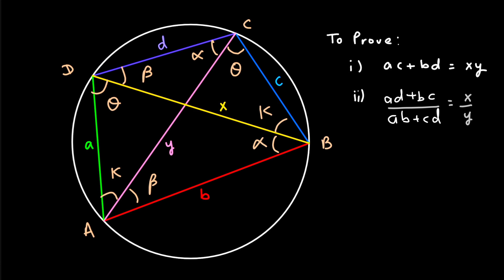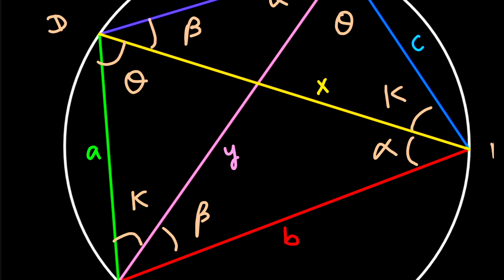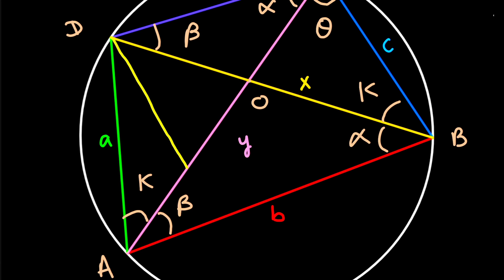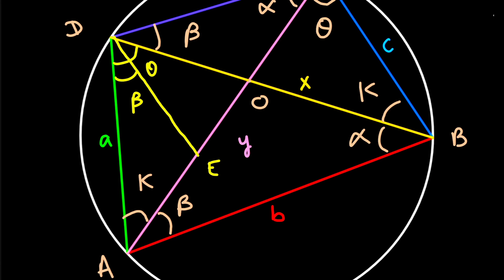Now let us do the trickiest part that will lead us to the answer that AC times BD equals XY — and that is constructing a very beautiful line segment. Let the intersection point of the diagonals be O. Now I will draw one more line segment DE. What makes this construction special is that the line segment DE forms an angle beta with the side length AD, meaning angle ADE equals beta. Remember that the complete angle over here was equals to theta. Some part of it is beta, therefore the remaining part — angle EDO — equals theta minus beta.